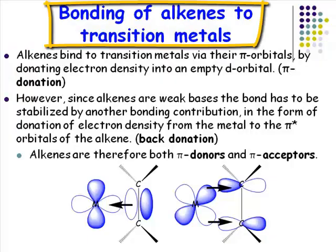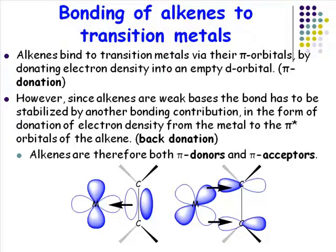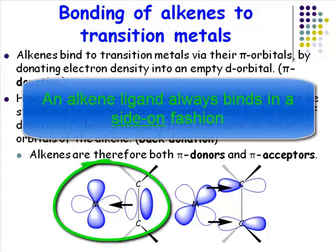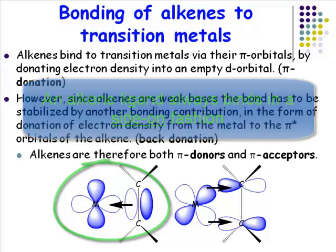This is the bonding of alkene ligands. An alkene ligand bonds to a transition metal — and this is one area where students sometimes become confused — the alkene ligand is bonded side-on. It is never seen bonded end-on.